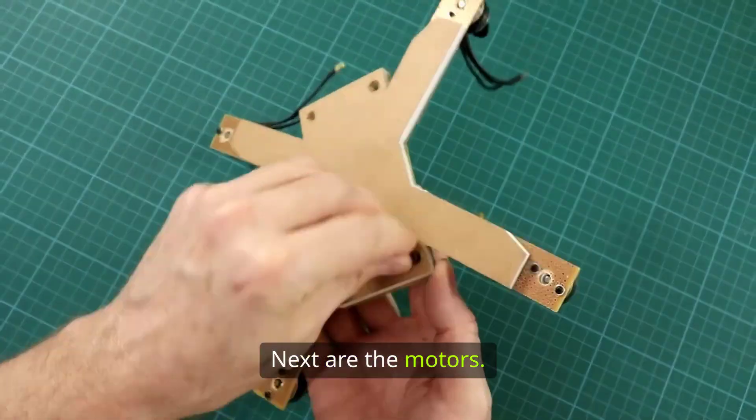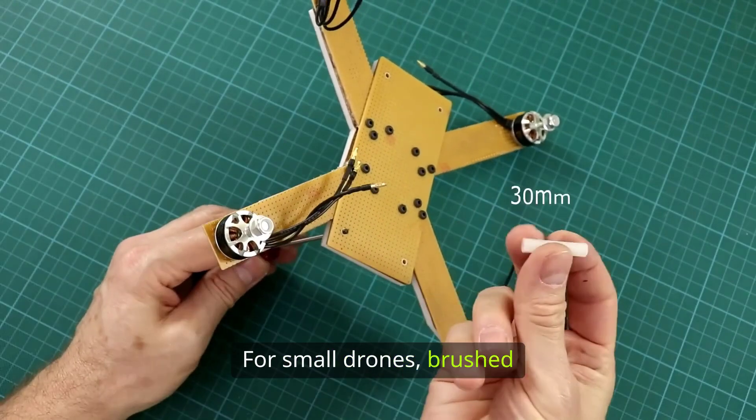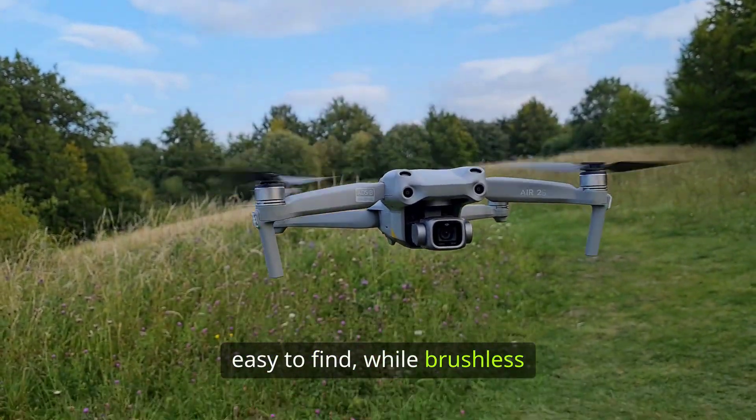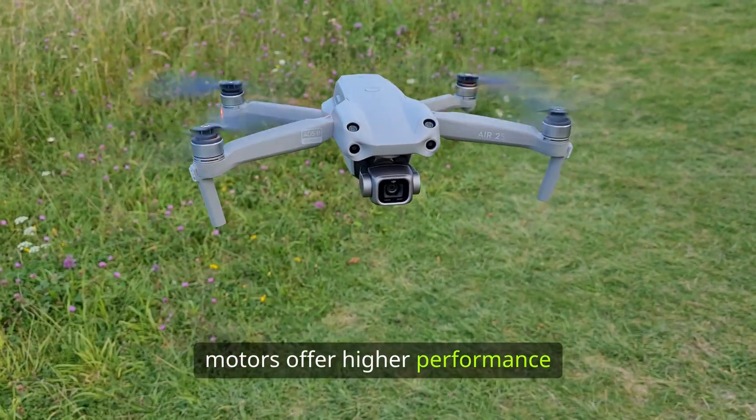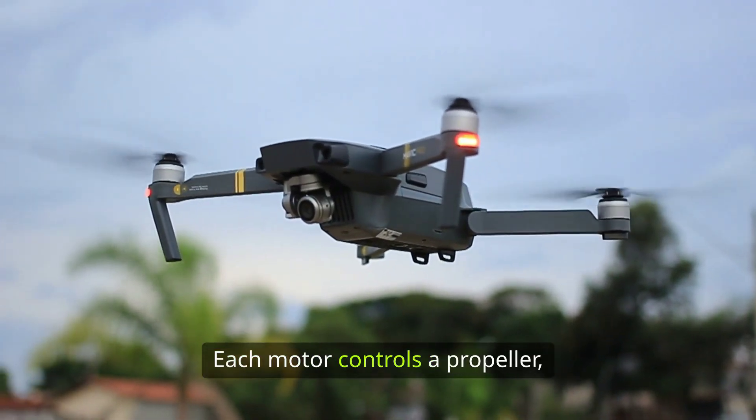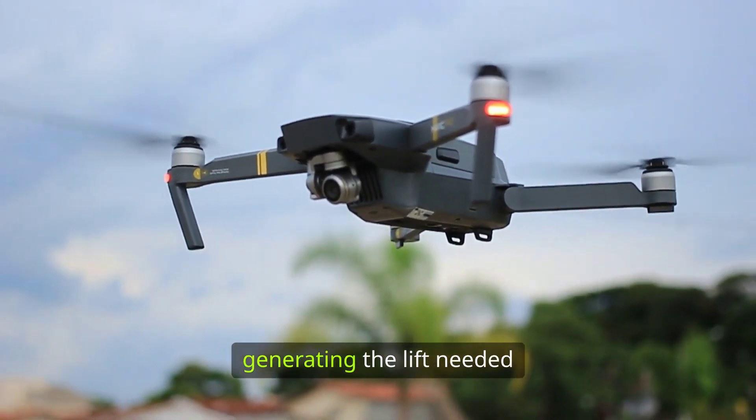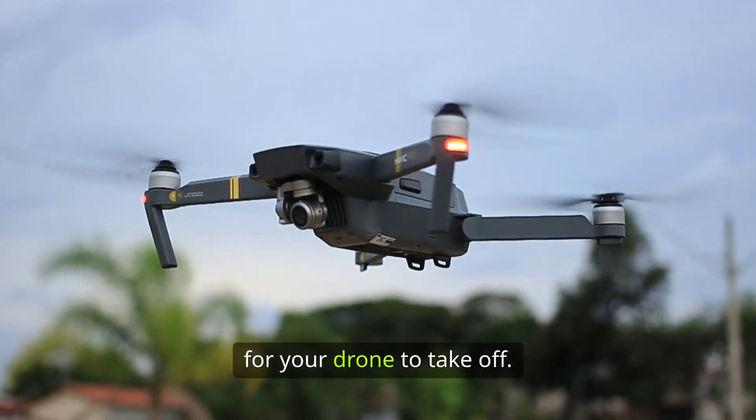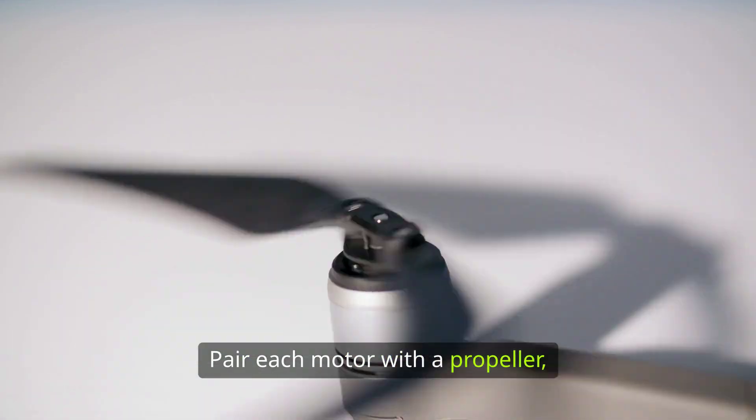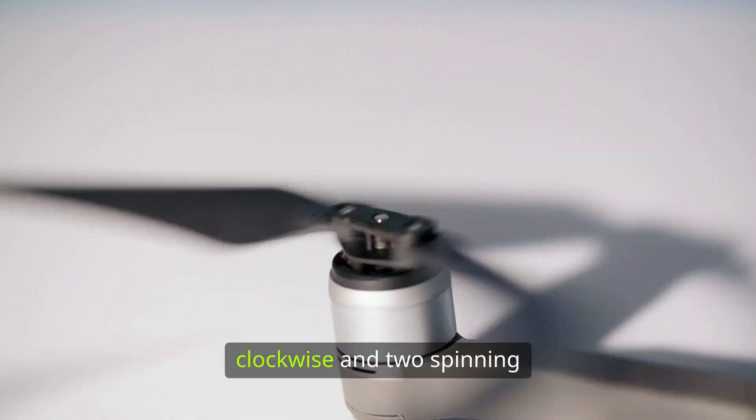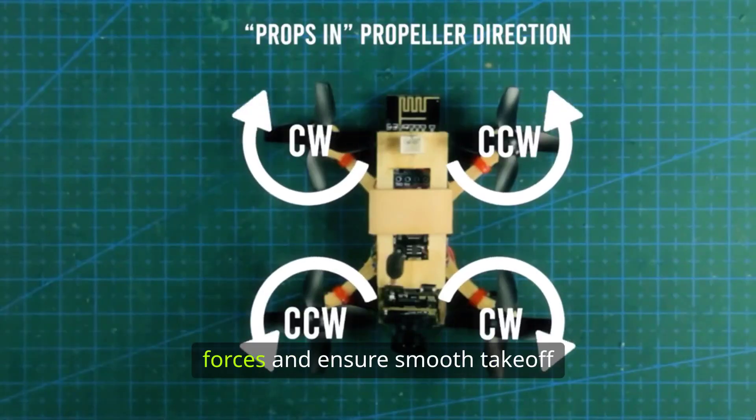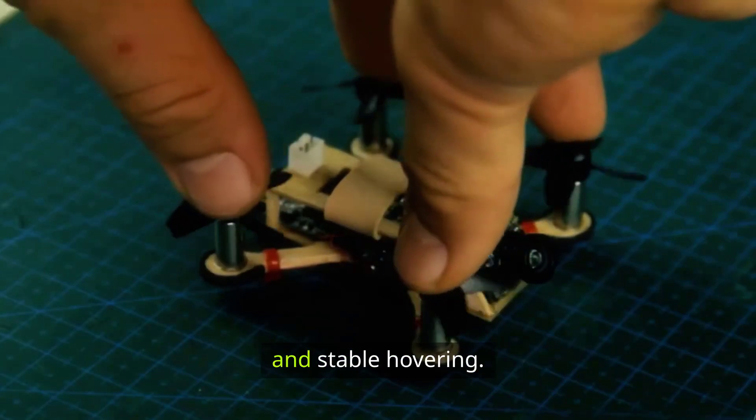Next are the motors. For small drones, brushed motors are inexpensive and easy to find, while brushless motors offer higher performance and longer lifespan. Each motor controls a propeller, generating the lift needed for your drone to take off. Pair each motor with a propeller, usually two spinning clockwise and two spinning counterclockwise, to balance the rotational forces and ensure smooth takeoff and stable hovering.